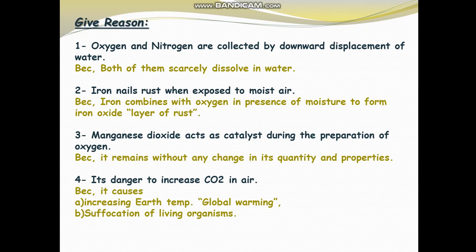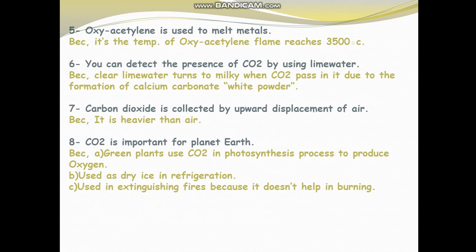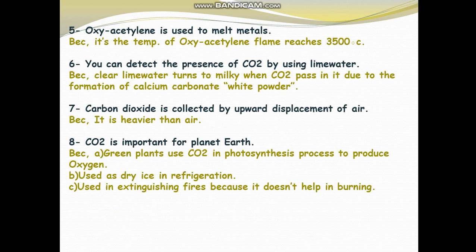Question 5: Oxy-acetylene is used to melt metals. Why? Because oxy-acetylene has a very high temperature, which reaches up to three thousand five hundred degrees Celsius. That is why we use the oxy-acetylene flame to melt metals.